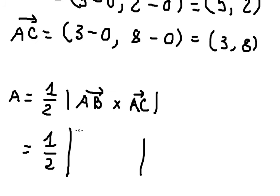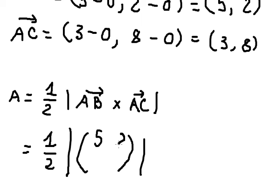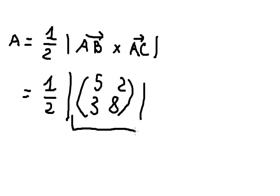We know that we have the matrix in here inside the absolute value. So we have vector AB, we have number 5 and number 2, and 3, 8. We need to find the determinant of this one. So the formula should be like this.